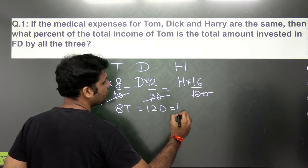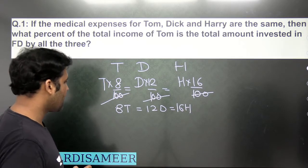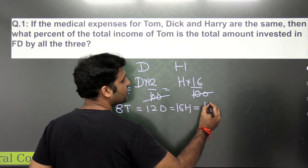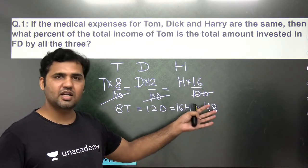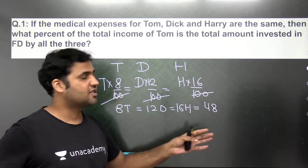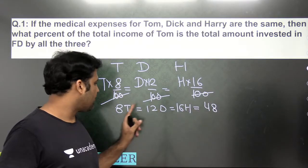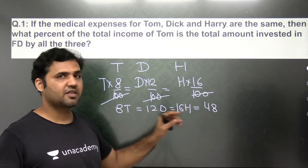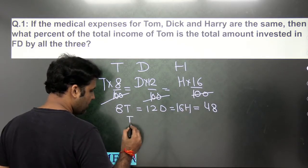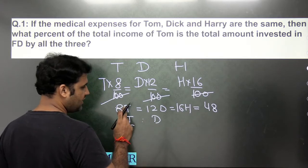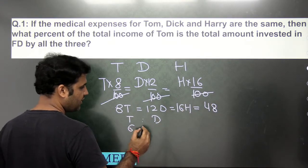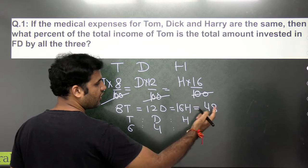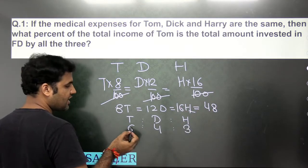So 8T = 12D = 16H. To find the ratio, we set this common value to 48 — the LCM of 8, 12 and 16 — which reduces our calculations. This gives us: Tom's income = 48/8 = 6, Dick's income = 48/12 = 4, and Harry's income = 48/16 = 3. So the ratio of their incomes is 6 : 4 : 3.